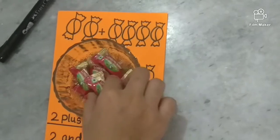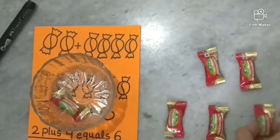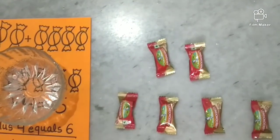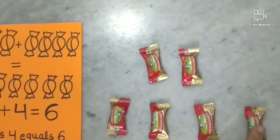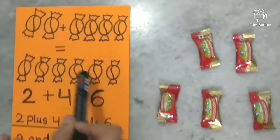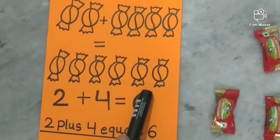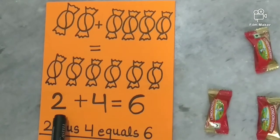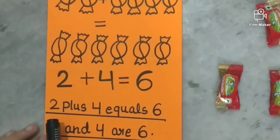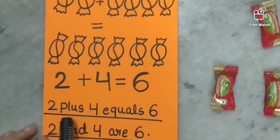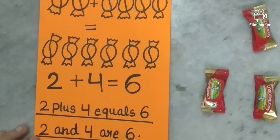See, two candies and four candies are six candies in all. One, two, three, four, five, six. Which means two plus four is equal to six. We write it as two plus four is equal to six. We read this as two plus four equals six, or two and four are six.